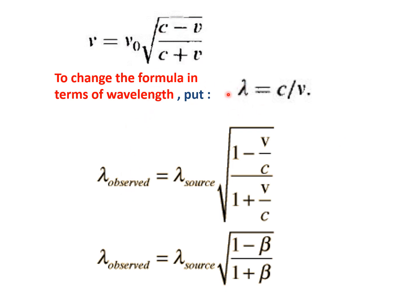These formulas can also be expressed in terms of wavelength λ, since for electromagnetic waves c = ν·λ. Replacing ν with c/λ and ν₀ with c/λ₀, we find: λ_observed = λ_source · √[(1 + β)/(1 − β)] for the receding case, where β = v/c. This is the wavelength form used in calculations.